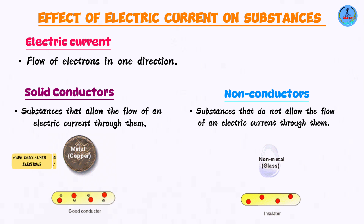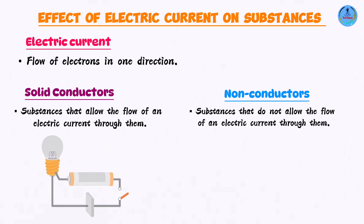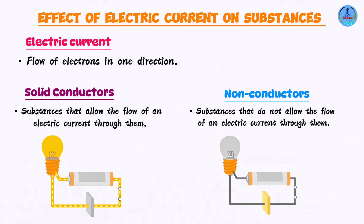If you want to find out whether a substance is a conductor of electricity or not, you can have such a setup. You're going to place the substance being tested at this point. This setup is going to include a bulb, and the bulb is going to let us know whether the substance being tested is a conductor or not. When the bulb lights up, it shows that the substance is capable of conducting an electric current. When it doesn't light up, then you know the answer.